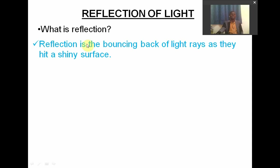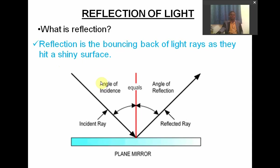We are saying reflection is the bouncing back of light rays as they hit a shiny surface. We are seeing the light rays coming to hit a shiny surface, which is the plane mirror, and they are bouncing back altogether. This bouncing back is what we are referring to as reflection.